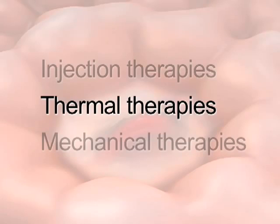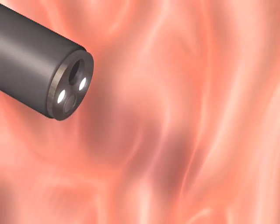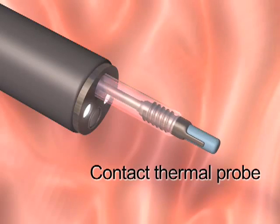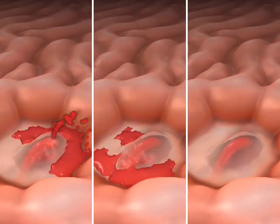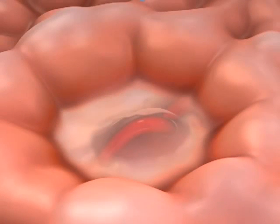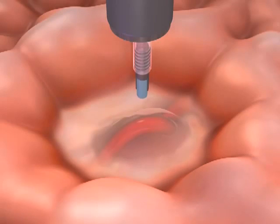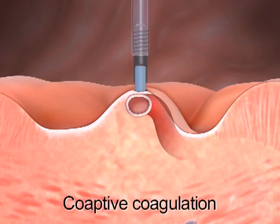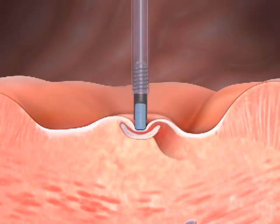Thermal therapies use either contact methods, such as multipolar electrocoagulation or a heater probe, or non-contact methods, such as argon plasma coagulation. This animation demonstrates the use of a contact thermal probe placed into the working channel of a large, single-channel or double-channel therapeutic endoscope. The probe should be placed directly over the target site and pressure applied to cause indentation of the targeted tissue with compression of the underlying vessel while delivering thermal energy. This action is referred to as co-active coagulation, and its aim is to weld the artery shut.